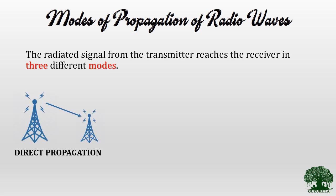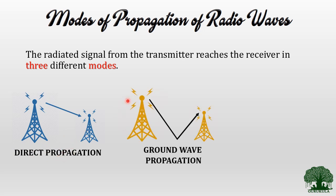To answer that, there are different modes of propagation. The radiated signal from the transmitter reaches the receiver in three different modes. The first mode is direct propagation. Here the transmitter radiates and the signal reaches the receiver without any reflection, diffraction, or scattering — this is what we call line-of-sight propagation. When you have a clear line of sight between the transmitter and receiver, your signal will directly propagate to the receiver. This mode is referred to as direct propagation.